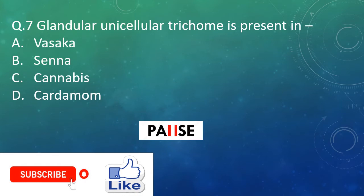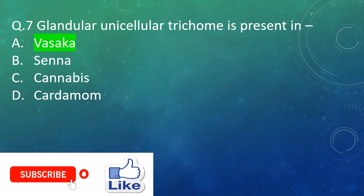Question seven: Glandular unicellular trichome is present in which plant? Option A: Vasaka. Option B: Senna. Option C: Cannabis. Option D: Cardamom. And the right answer is Option A: Vasaka.